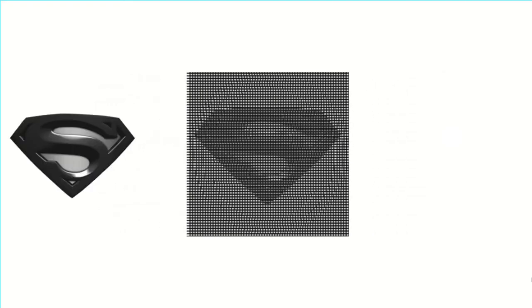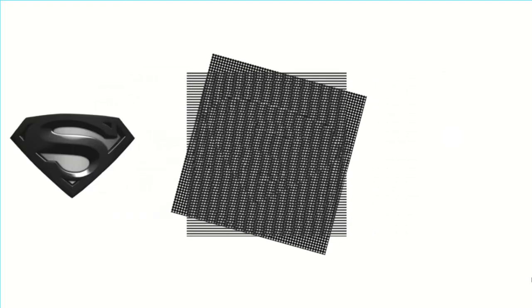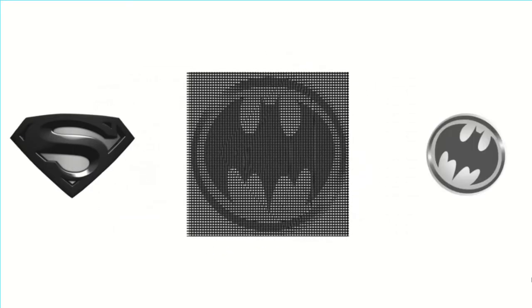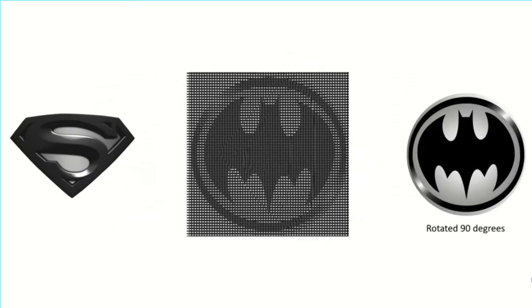What do you think will happen when we move the square grid on top of the horizontal line grid? Well, that is the Superman logo. And if I rotate it by 90 degrees, that's Batman. Crazy, right?